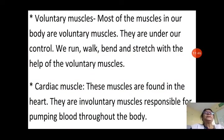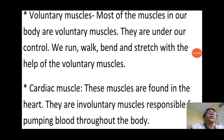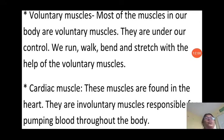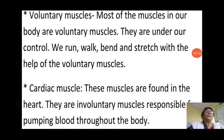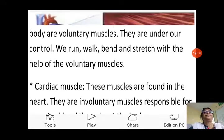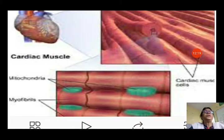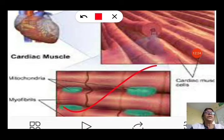Second: voluntary muscles — most muscles in our body are voluntary and are under our control. We can control our hands and legs — we can run, walk, bend, and stretch with the help of voluntary muscles. Third: cardiac muscles — these are found in the heart only. They are involuntary in function and responsible for pumping blood throughout the body. We cannot control the pumping of blood. The special cells present in the heart are known as cardiac muscles.